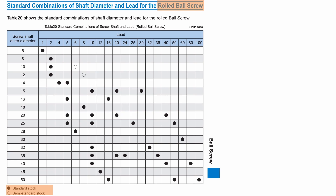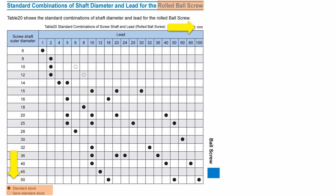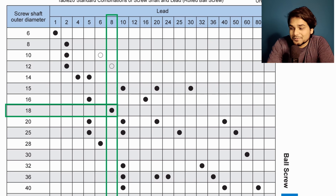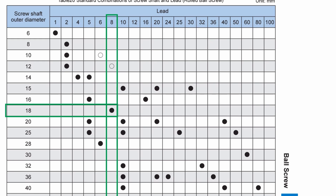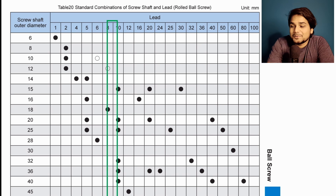The calculated lead is 8 mm, so we can select 8 mm or higher. Checking the manufacturer catalog, the standard combination table shows that for 8 mm lead, only an 18 mm diameter ball screw is available. Since 8 mm is not a popular lead size and may not be easily available, it is better to go with a popular lead size higher than 8 mm. Popular lead sizes are 5 mm, 10 mm, and 20 mm — so I will go with 10 mm lead.